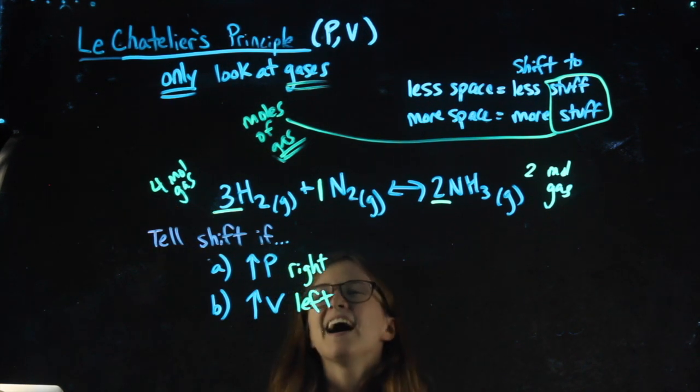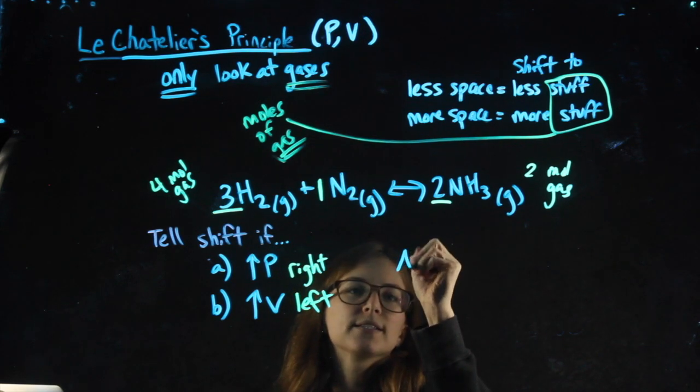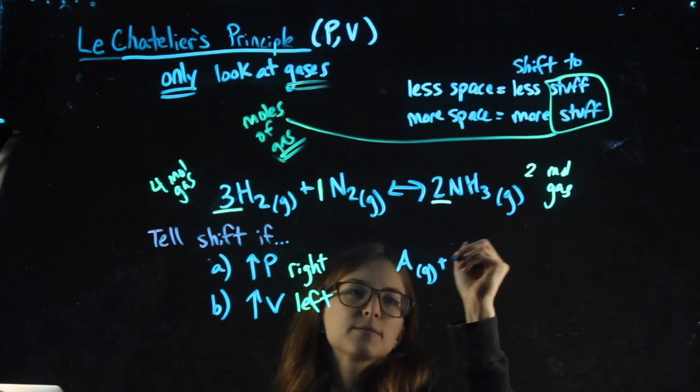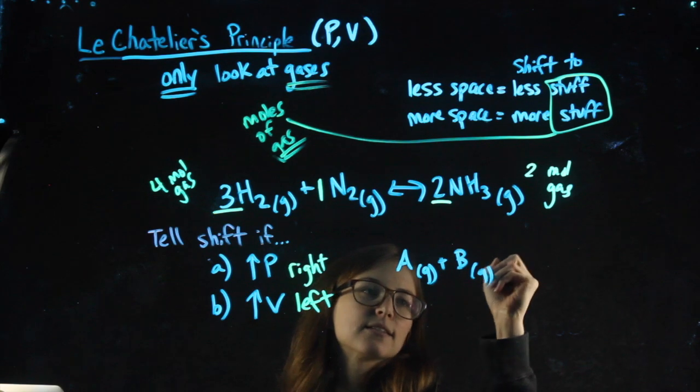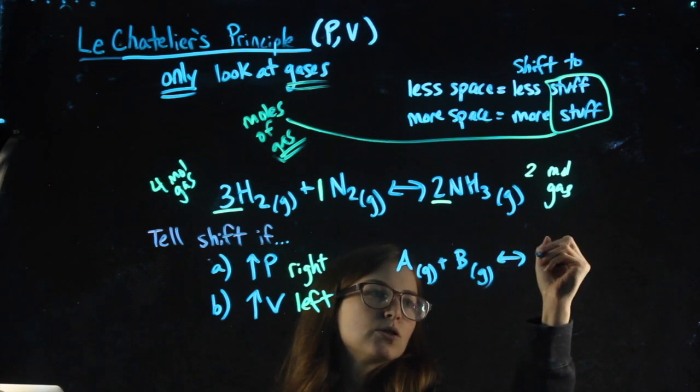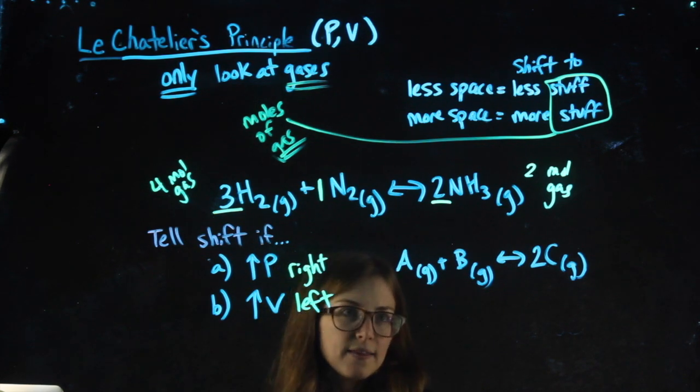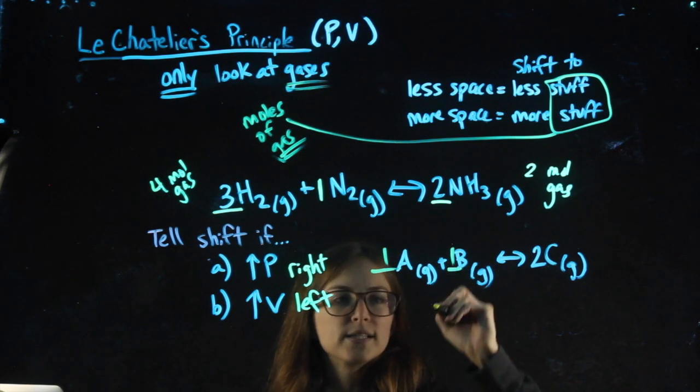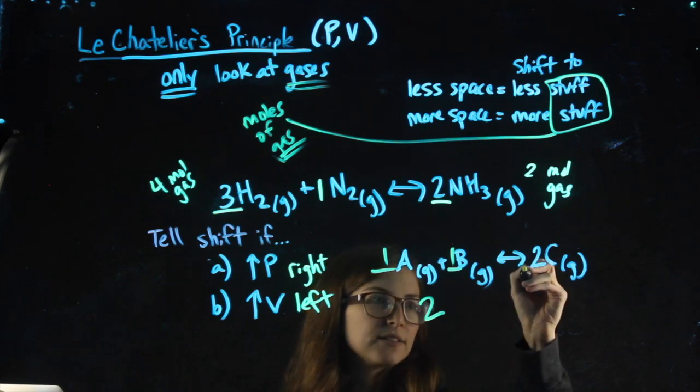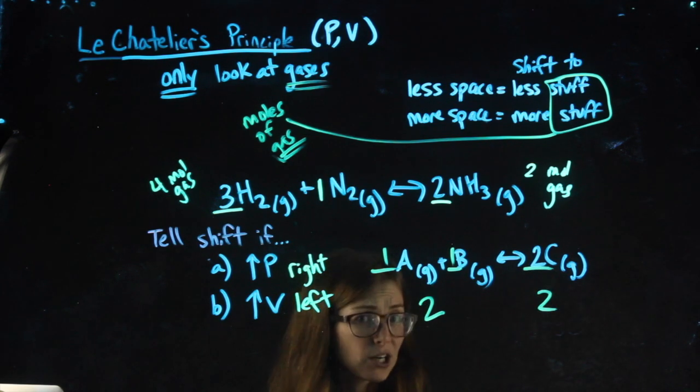One more thing. Let's say I gave you a different reaction where it was A, which is a gas, plus B, which is a gas, goes to 2C, which is a gas. Okay? In this example, invisible ones there, I have two moles of gas on the left and I have two moles of gas on the right. They're equal.